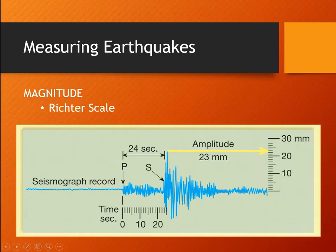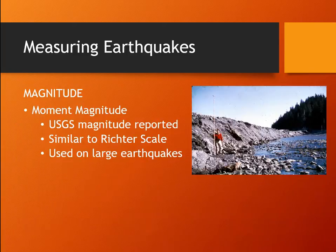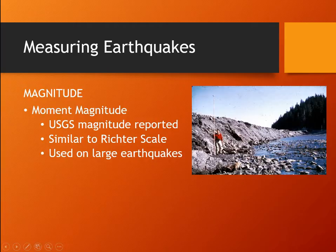The Richter scale can only be used for small earthquakes measured pretty close to where your seismogram is. The USGS switched over to using the moment magnitude, which works for pretty much any size of earthquake and also works for very distant earthquakes. This takes into account things like how rigid the rocks are, how easily they break, how long the fault is, and what size of the fault area actually moved.